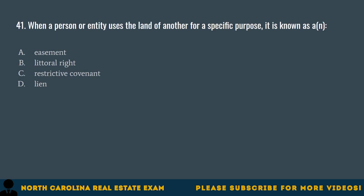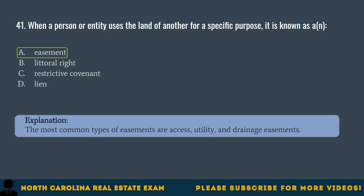Question 41. When a person or entity uses the land of another for a specific purpose, it is known as an A. Easement. B. Literal right. C. Restrictive covenant. D. Lean. The correct answer is A. Easement. The most common types of easements are access, utility, and drainage easements.